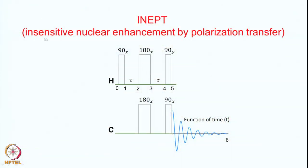INEPT stands for Insensitive Nuclear Enhancement by Polarization Transfer. This experiment has been described in previous classes by Professor Ashutosh Kumar. It is a polarization transfer experiment where the magnetization is transferred from proton to an insensitive nucleus like carbon-13 or nitrogen-15. Here I will consider proton and carbon-13 to see how the polarization gets transferred from proton to carbon, and we detect the carbon.